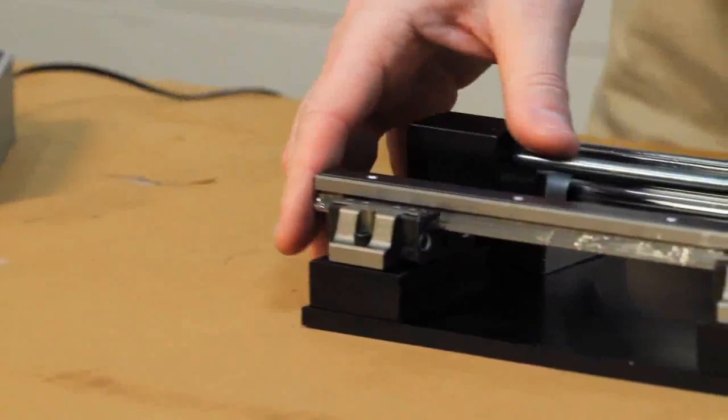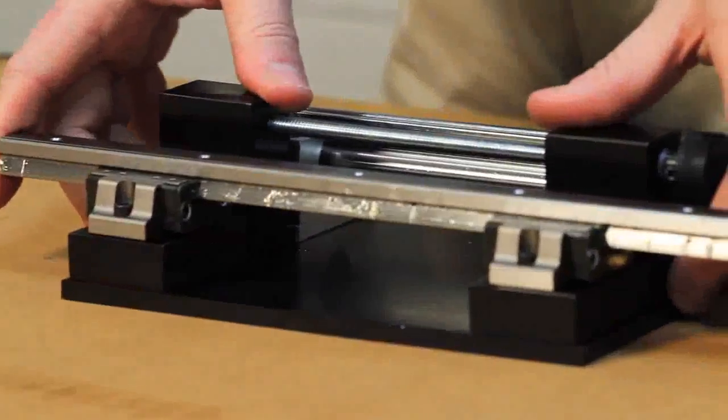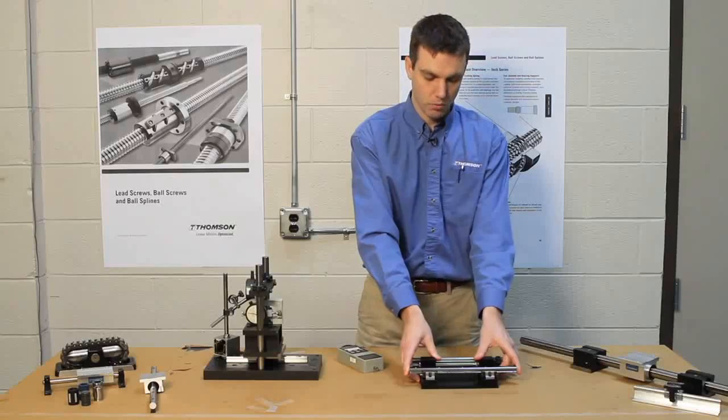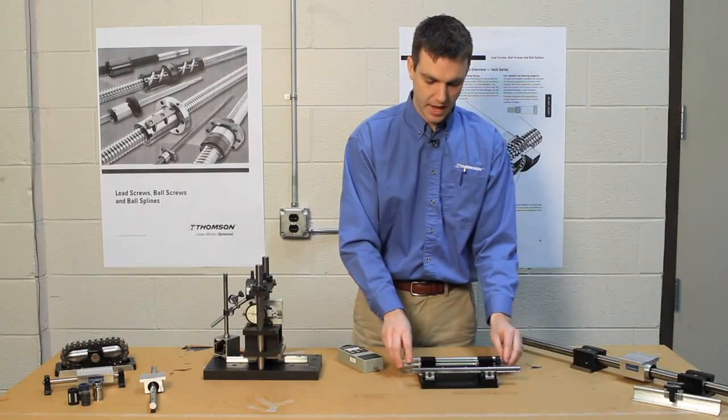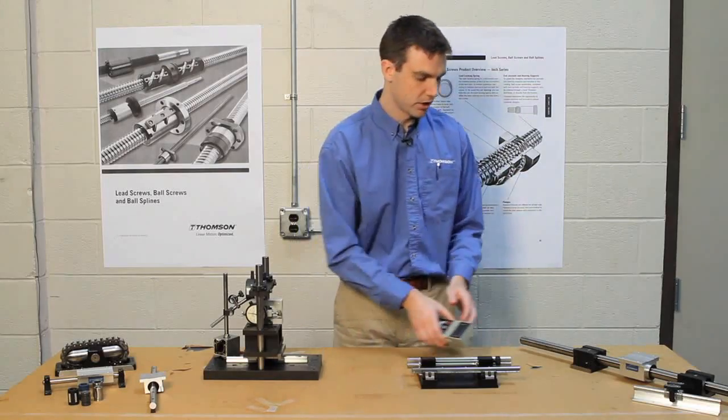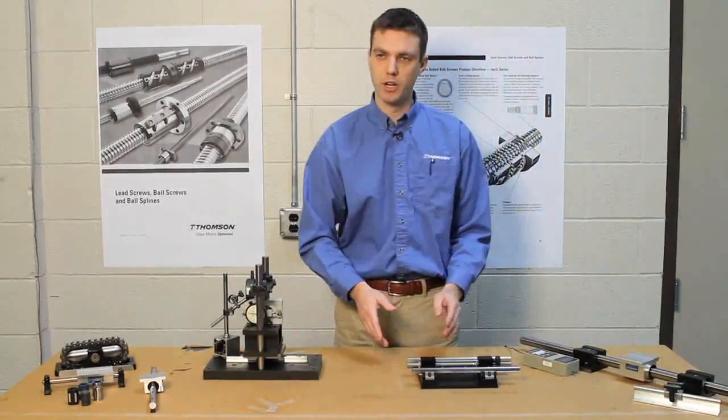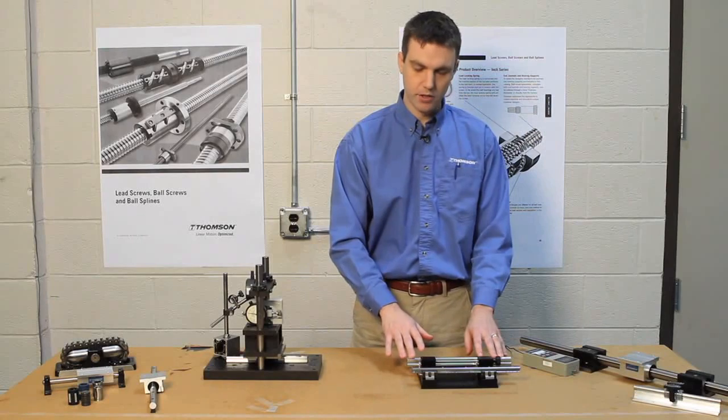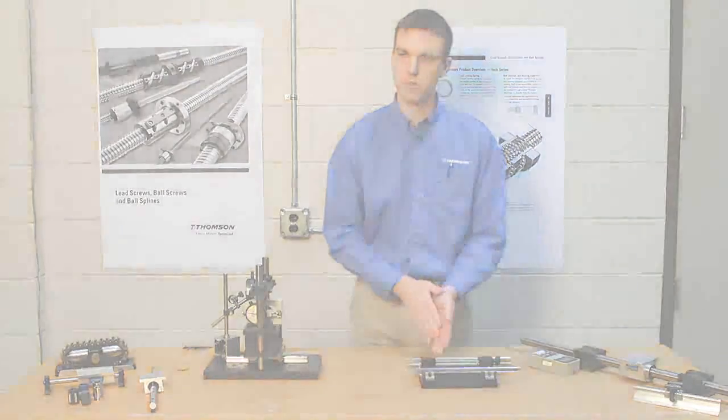If there was even more deformation in this base, you couldn't move this at all. It would completely seize. So what this illustrates is that depending on what your installation requirements are and what your base is like, it's really going to help drive you towards using a square rail versus a round rail.